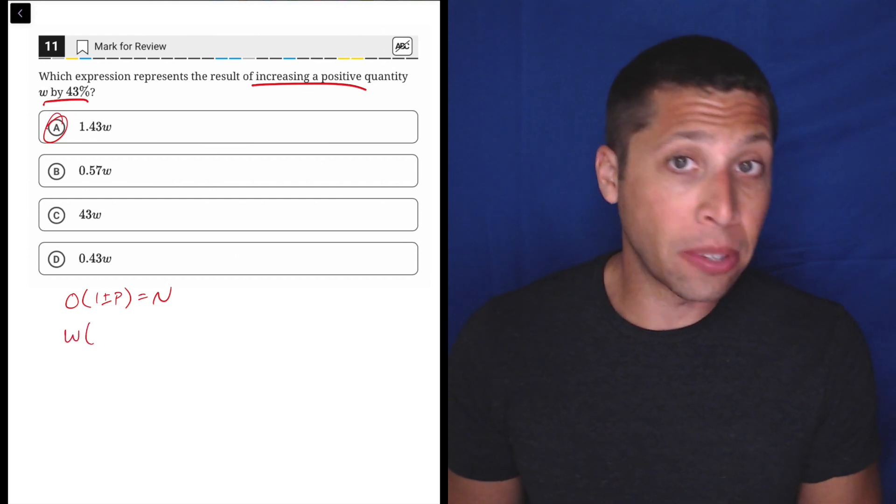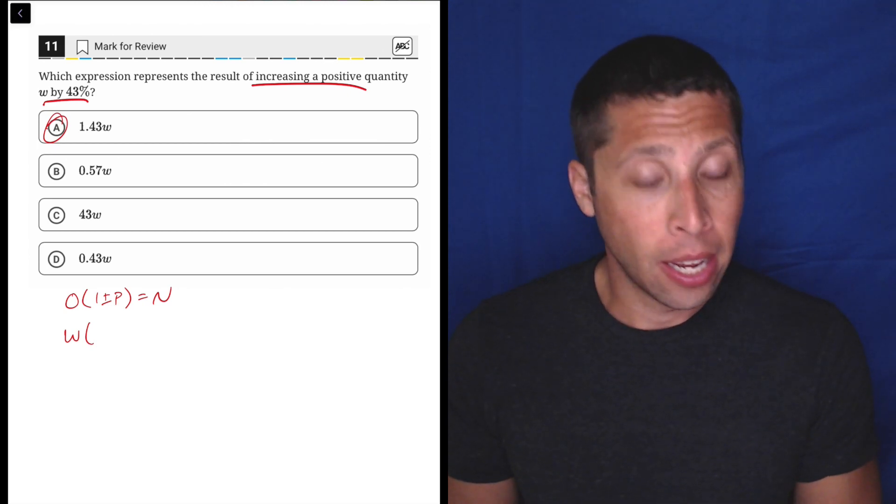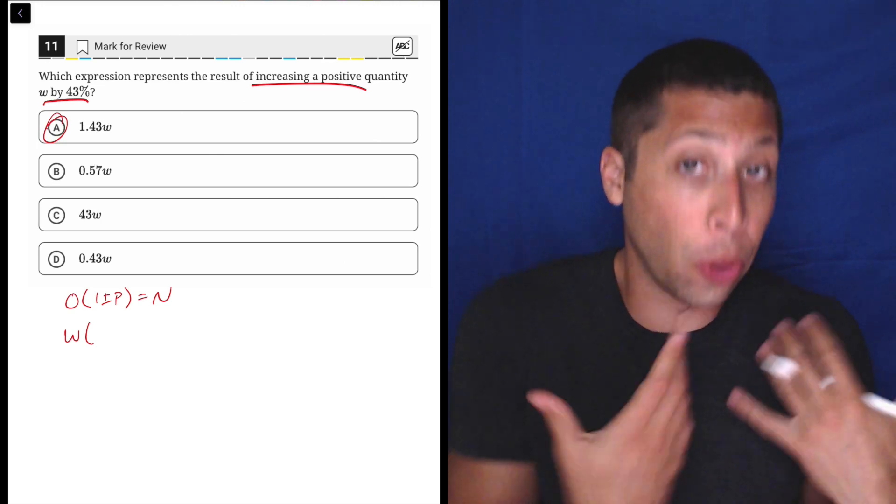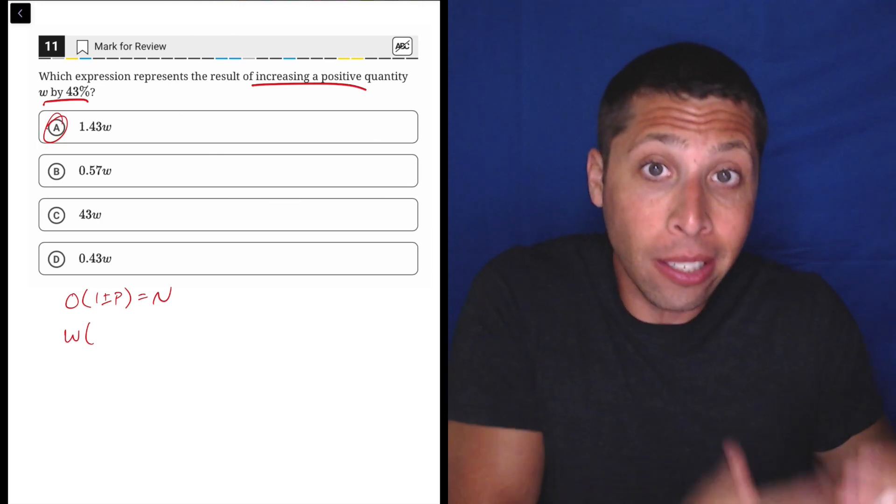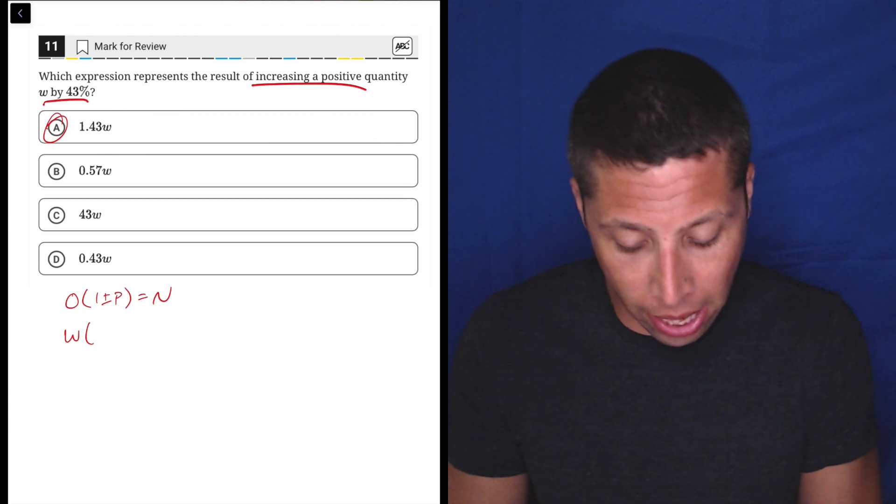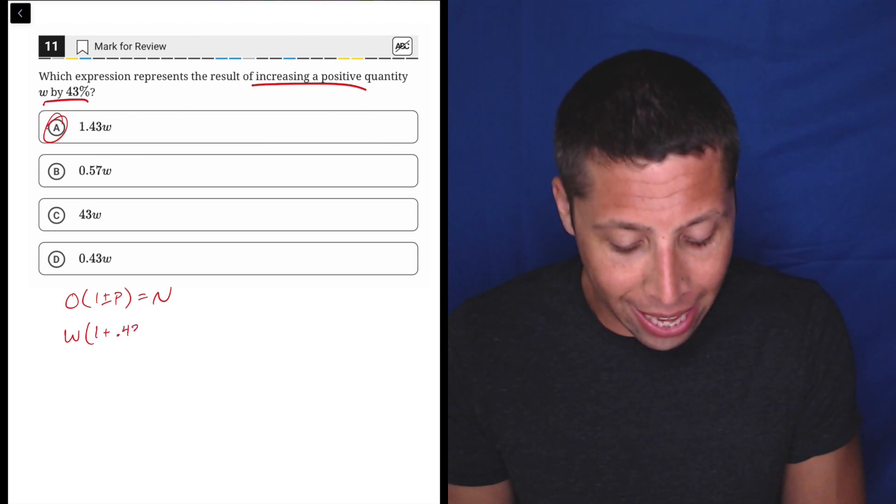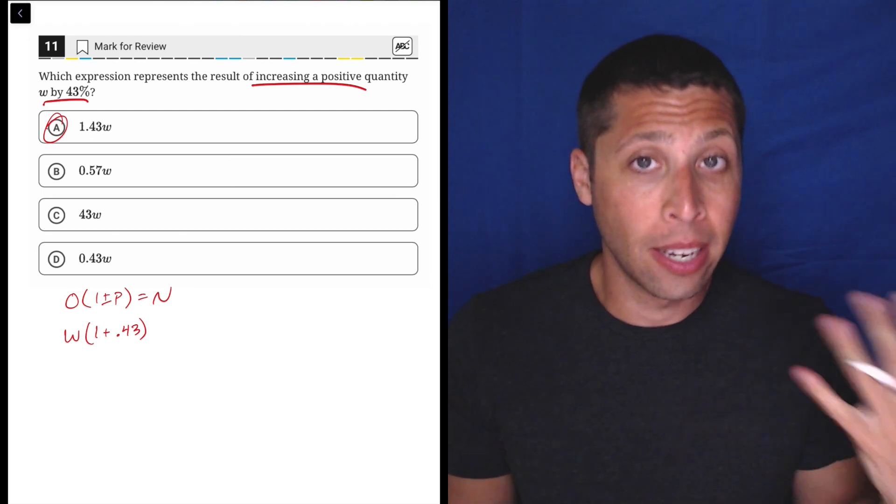1 plus or minus P represents the change in percentage. And here, the best part of this formula is it's very intuitive with the way the question is worded. They're telling us we're increasing by 43%, so increase means plus. And 43%, we just need to write that as a decimal.